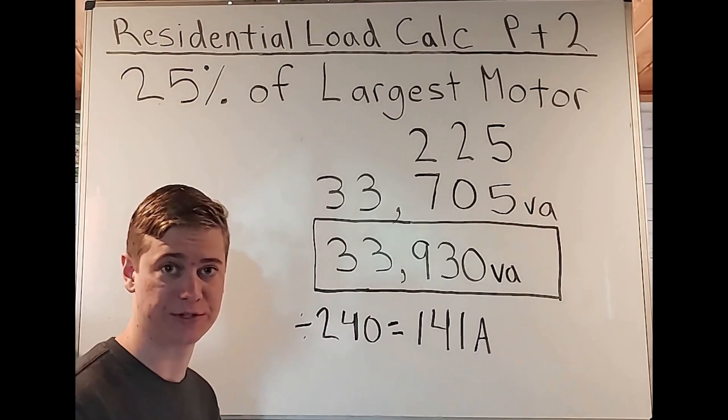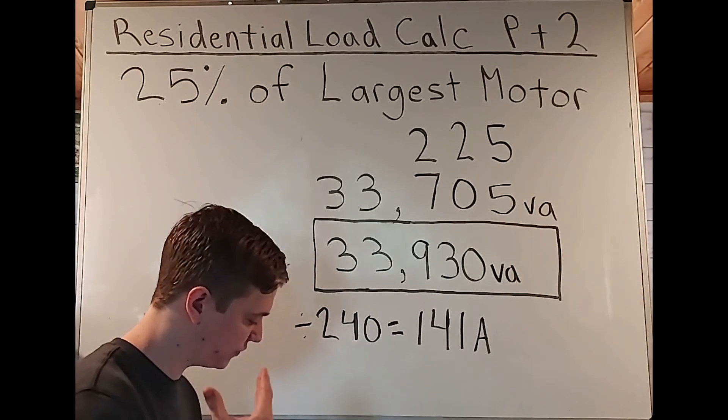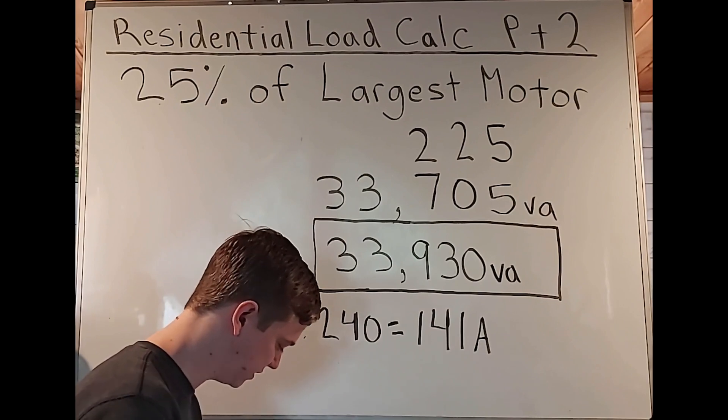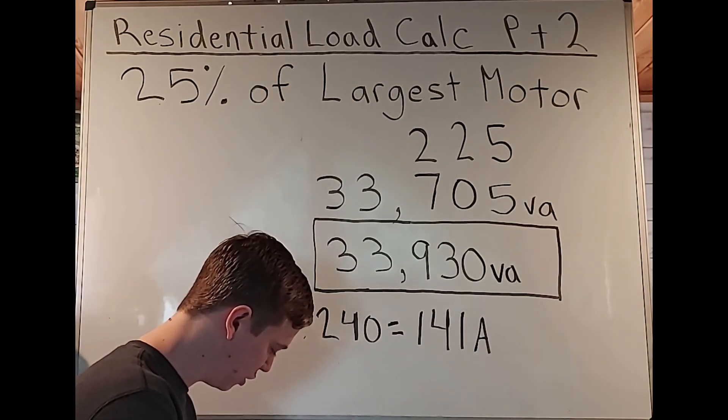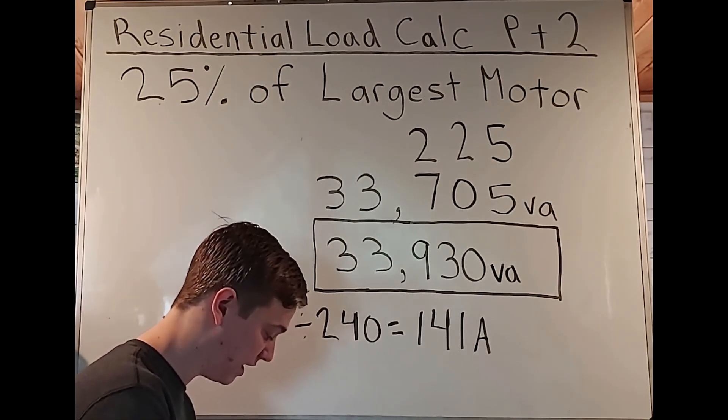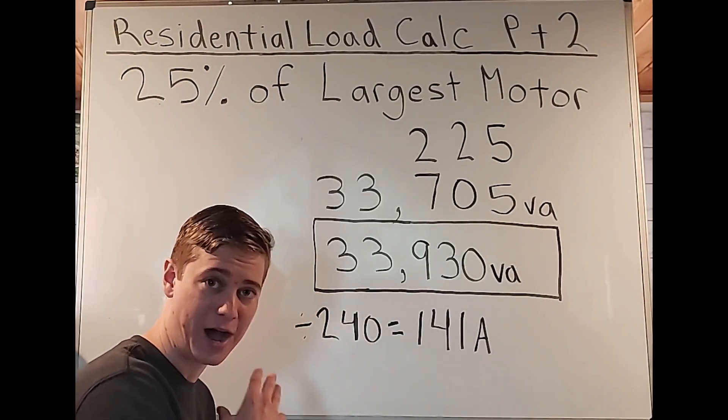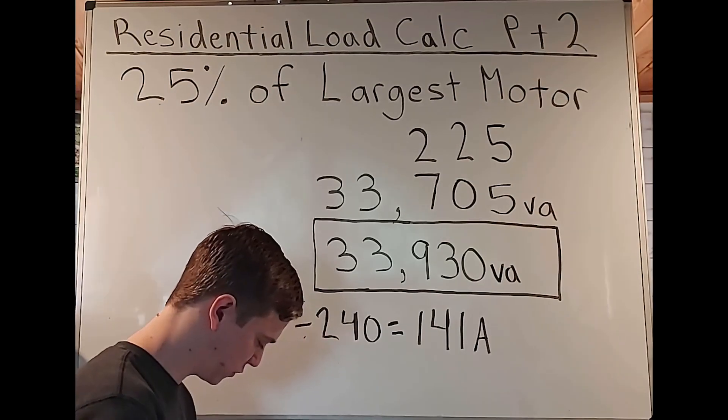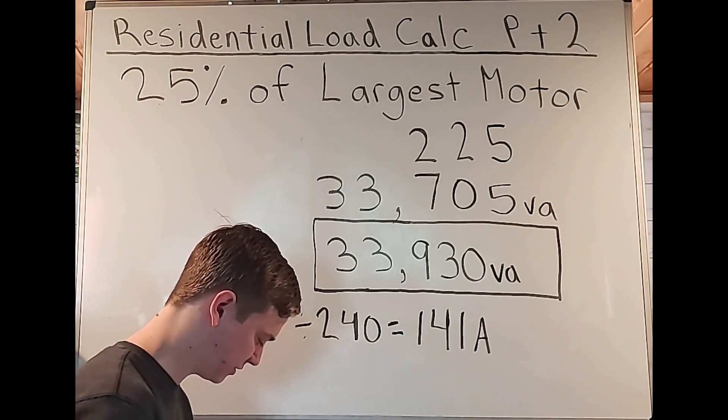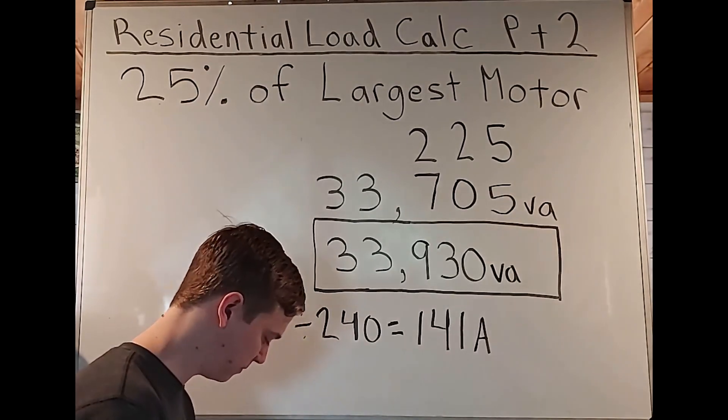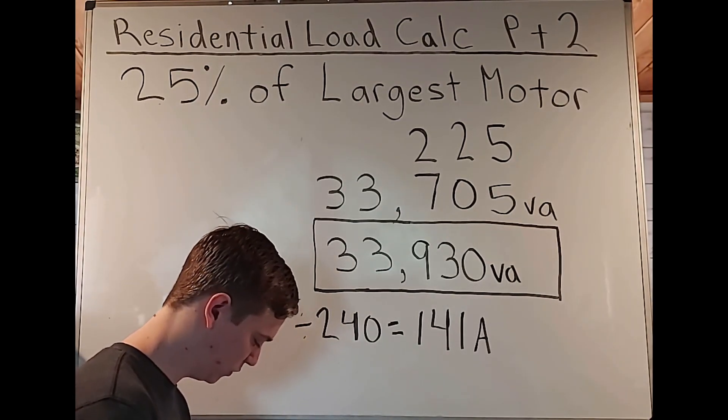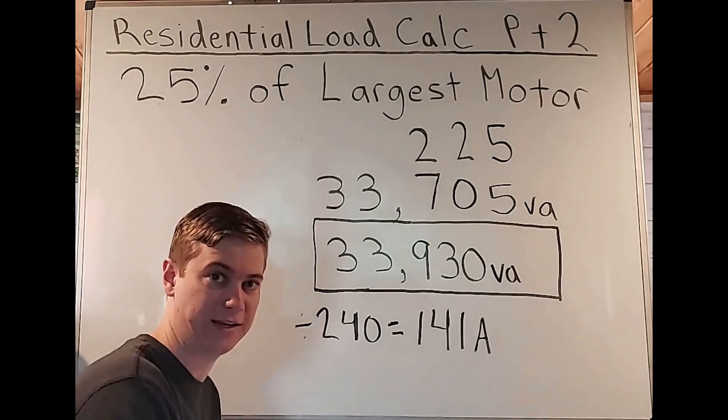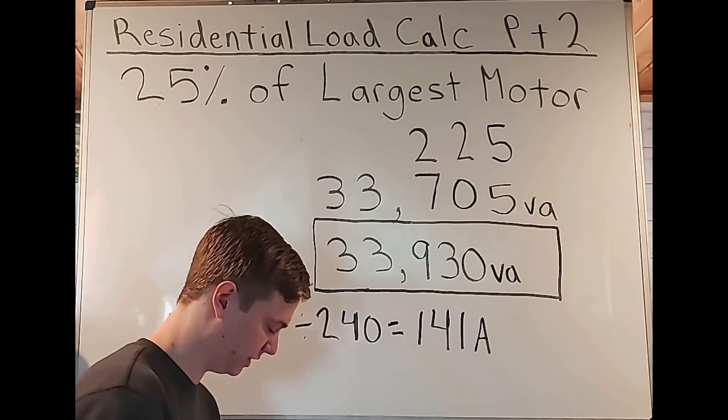Now that would be true, except for certain exceptions found in the code book. We're going to flip a page back and we're going to go to article 240.4 protection of conductors. We see under B overcurrent devices rated 800 amperes or less. So highlight this and remember this 800 amperes or less.